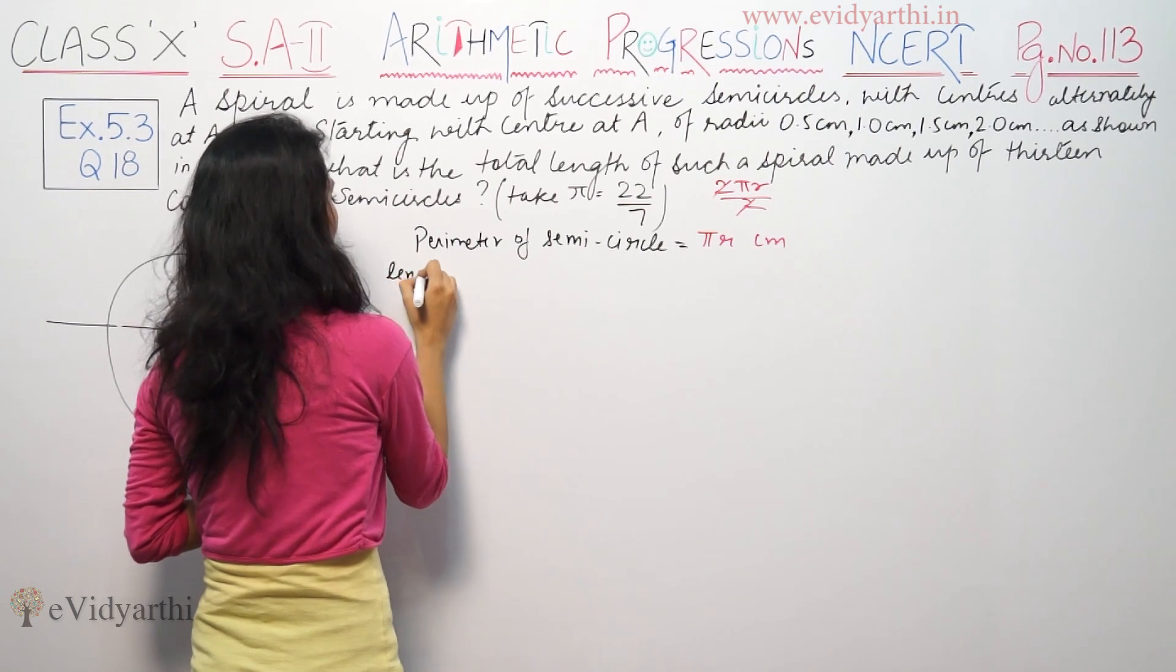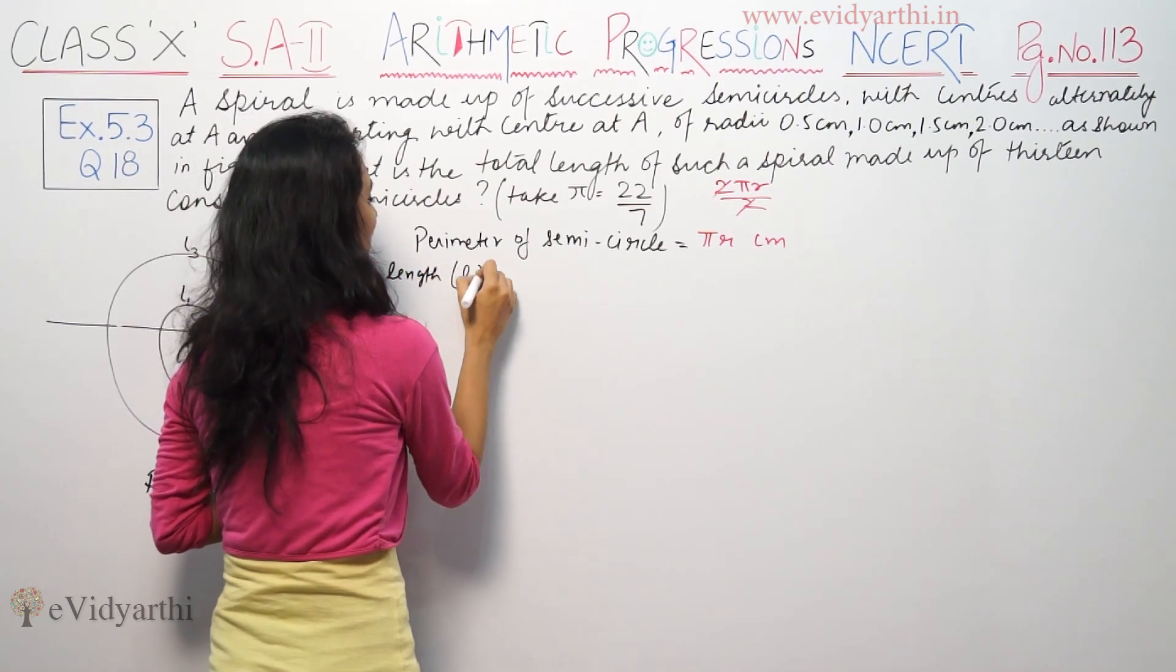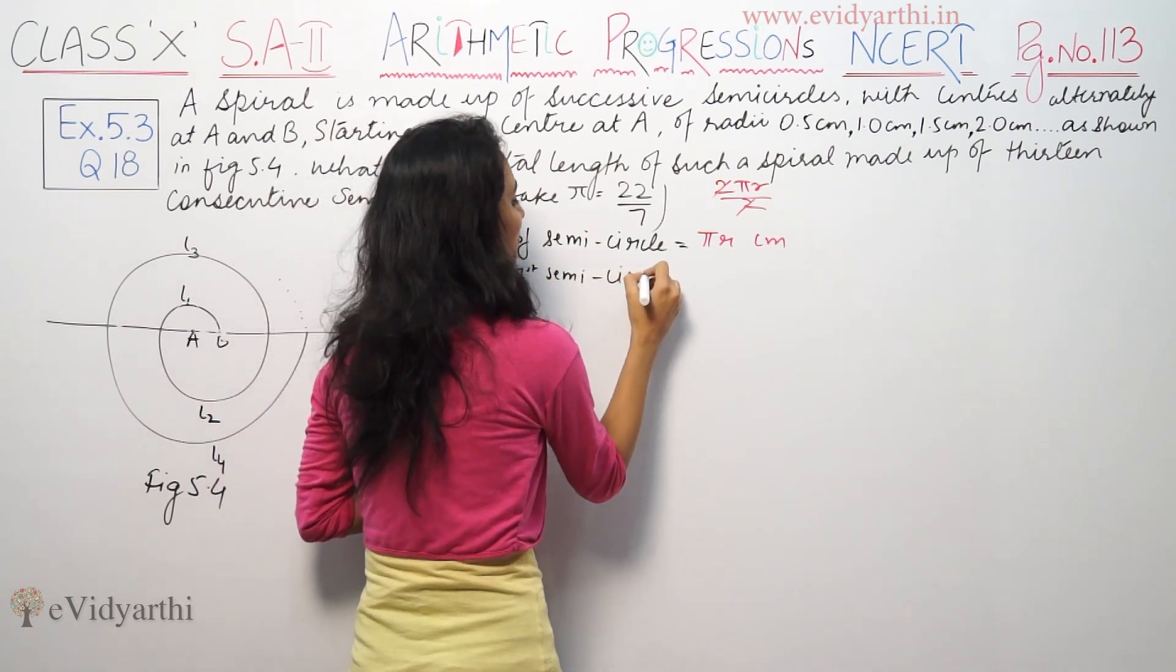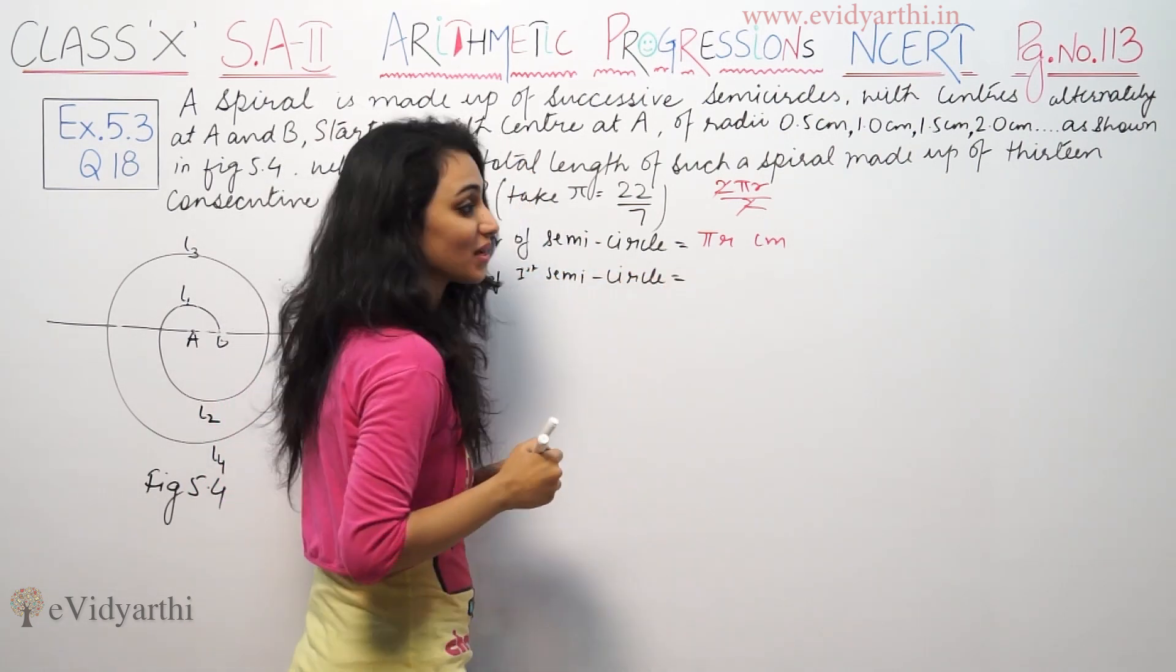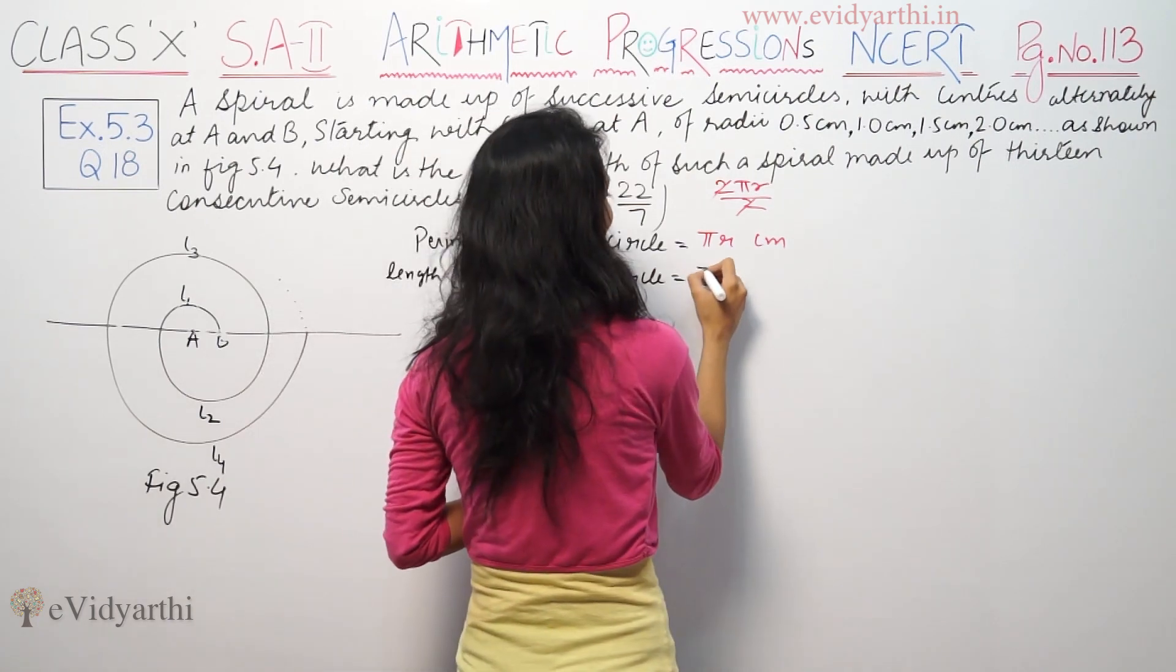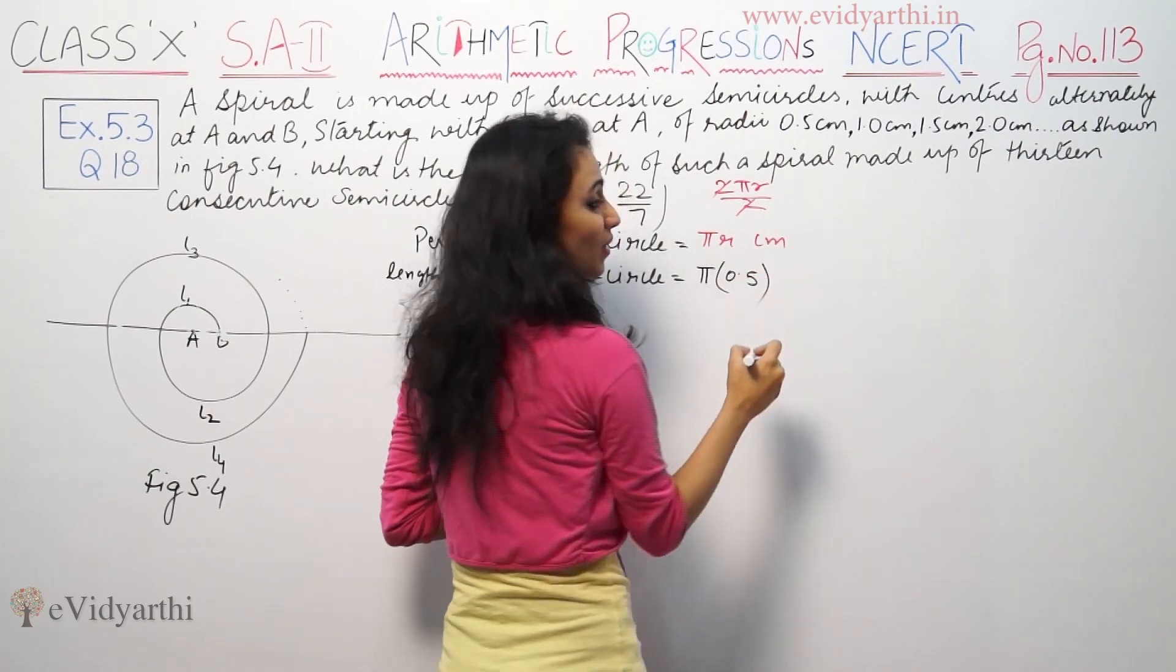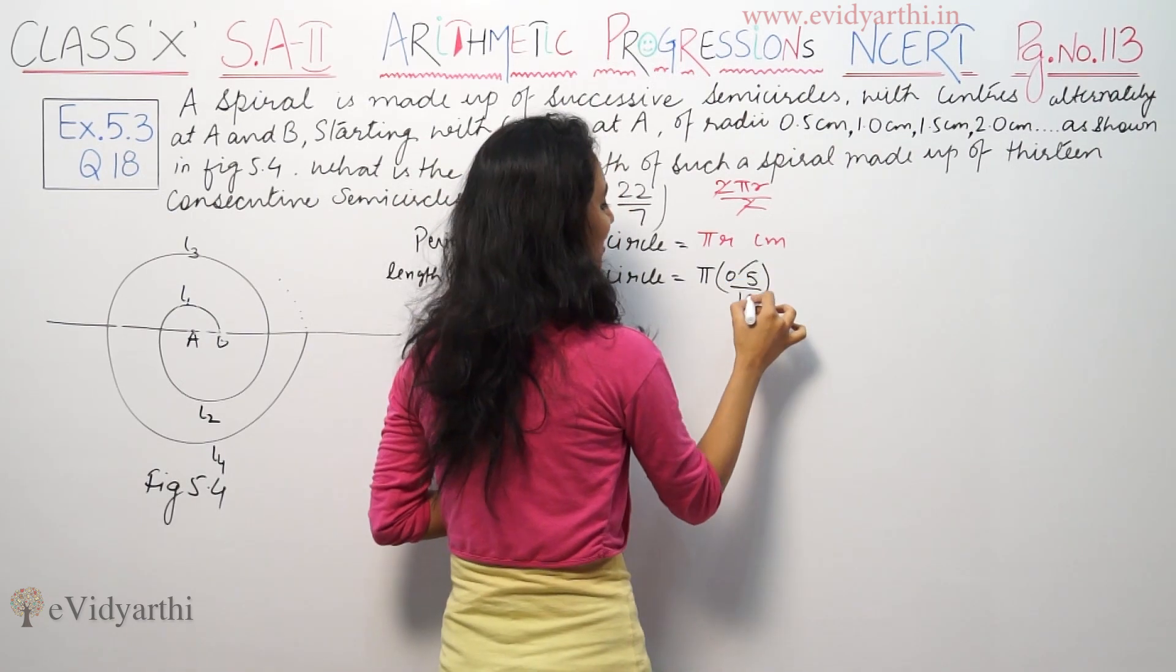L1, the first semicircle. What is the length of the semicircle? The radius is 0.5, so π into 0.5, that means π/2 cm.